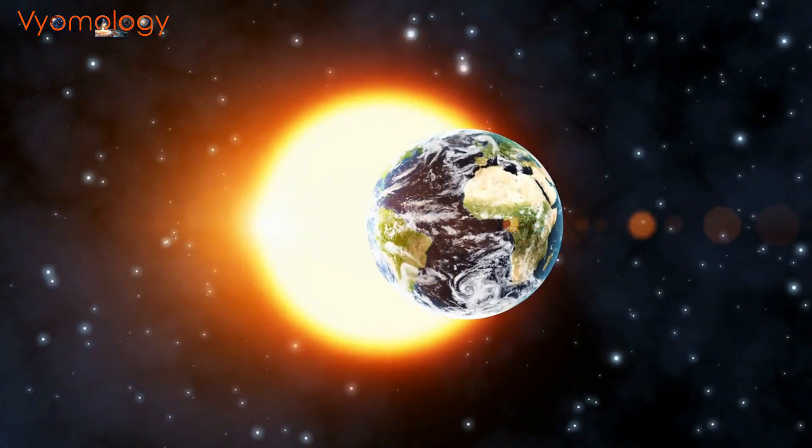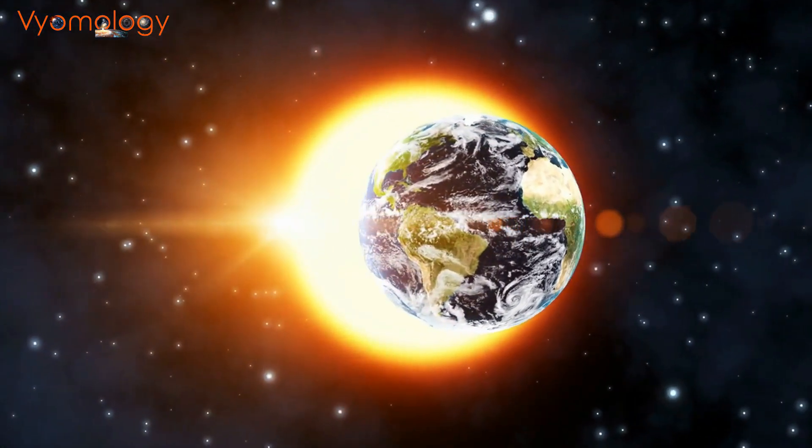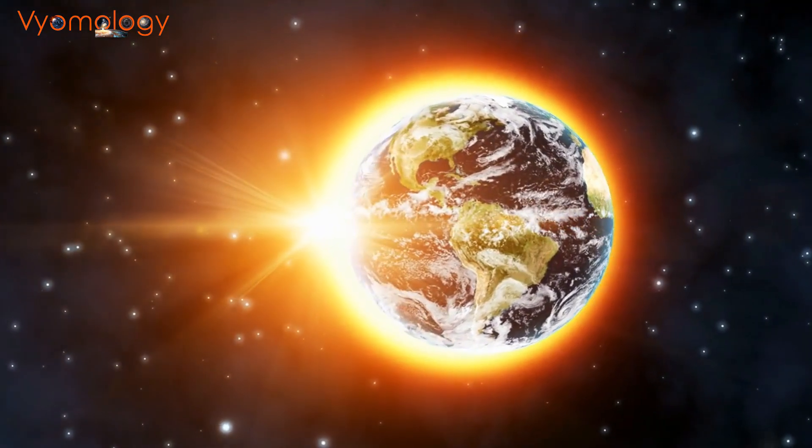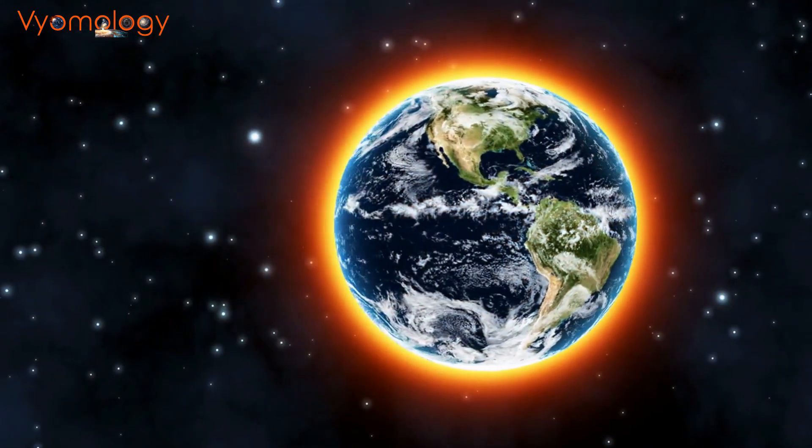Gravitational lensing, an effect of general relativity, was confirmed during a solar eclipse in 1919. The bending of starlight around the sun provided experimental evidence for Einstein's theory.